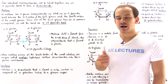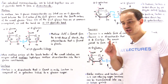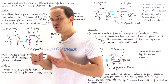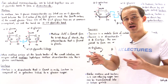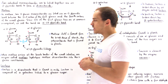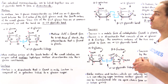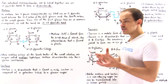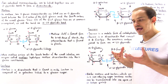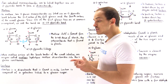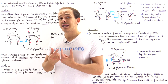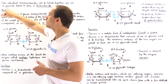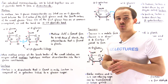So far in our discussion on carbohydrate molecules, we focused on the individual monomers of sugars we call monosaccharides. Now we're going to discuss how we can connect these individual monosaccharides together to form larger carbohydrate molecules. In this lecture we're going to focus on disaccharides. A disaccharide is a carbohydrate that consists of two individual monosaccharides connected by a special type of bond we call the O-glycosidic bond, which we introduced in the previous lecture.